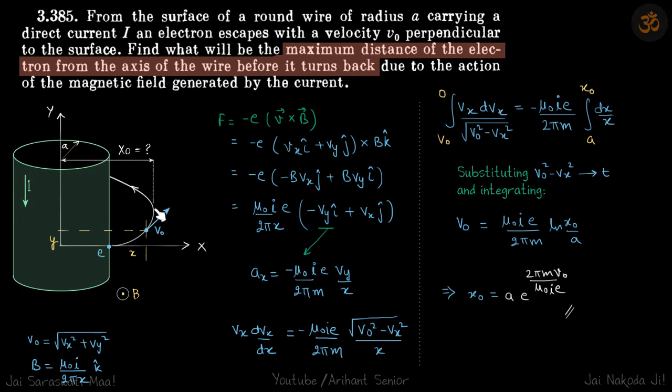So let's say it turns back here. We need to find this distance x0. Why will it turn back? Because the magnetic field in this particular case is outside, so the force on the electron will always be inside. So it's going to turn.